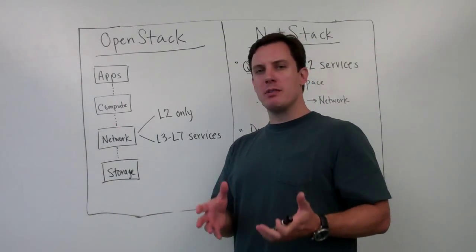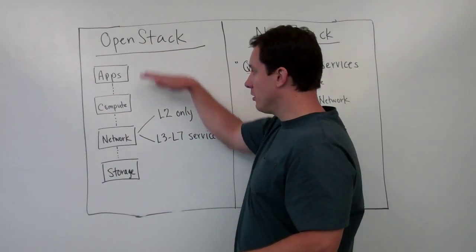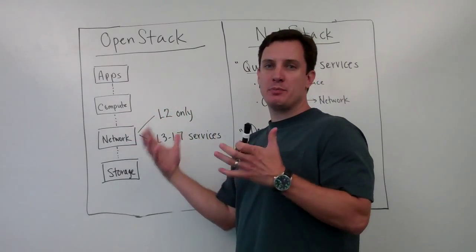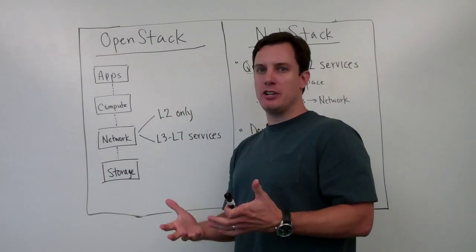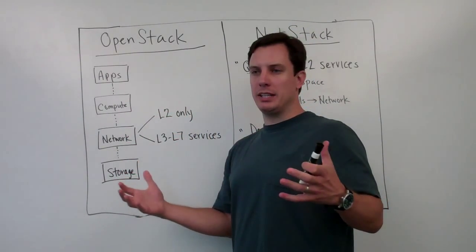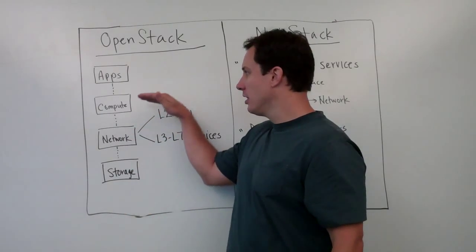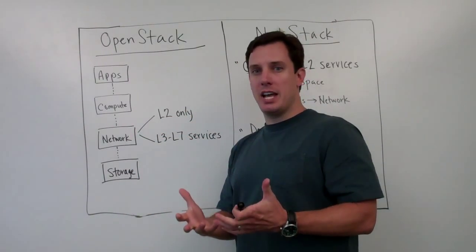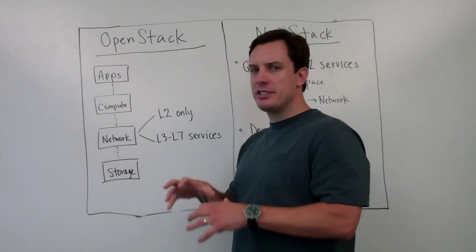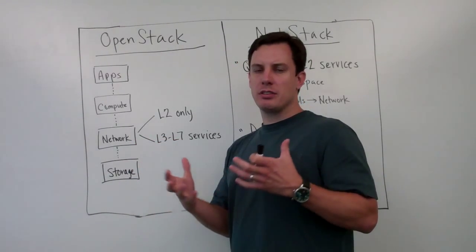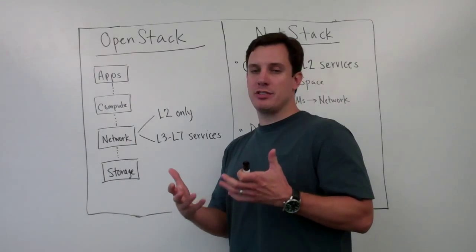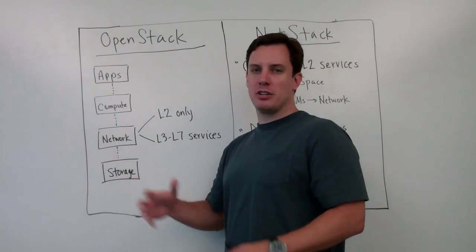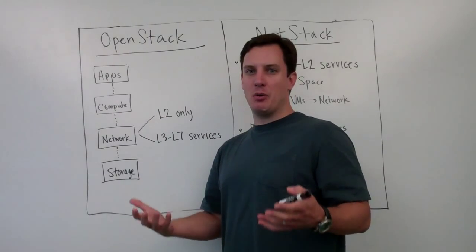If you remember from the last video, we talked about the OpenStack stack made up of apps, web apps, big data, new applications — highly scalable, highly dynamic applications — a compute layer, and a storage layer, which are defined today. We said that the network layer isn't as well-defined, but today's version of OpenStack, which is the C version, Cactus, essentially was a layer-two-only service with a very simple, flat network.